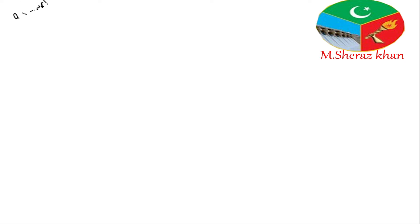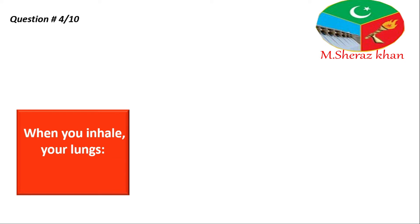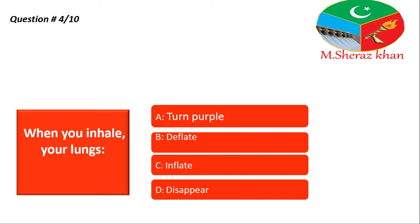Question number four: when you inhale, the mechanism of breathing consists of two steps — the process of inhalation and the process of exhalation. So what actually happens in the process of inhalation? When you inhale, what will happen to the lungs? Options: A — turn purple, B — deflate, C — inflate, D — disappear.